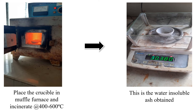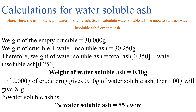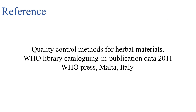Cool the crucible and weigh it. This is the water-insoluble ash obtained. For the calculation of water-soluble ash, note that the ash obtained here is water-insoluble ash. So, to calculate water-soluble ash, we need to subtract the water-insoluble ash from the total ash.